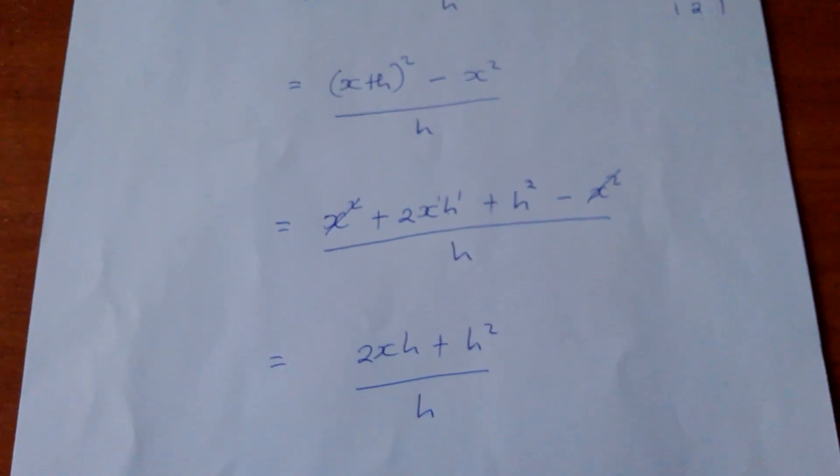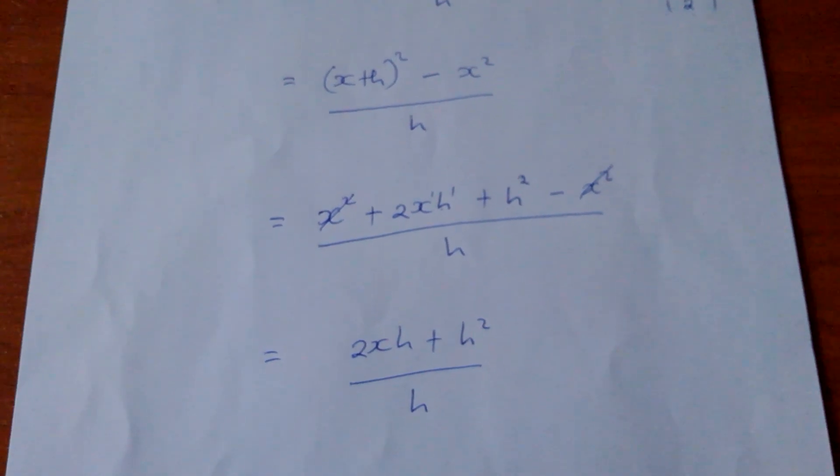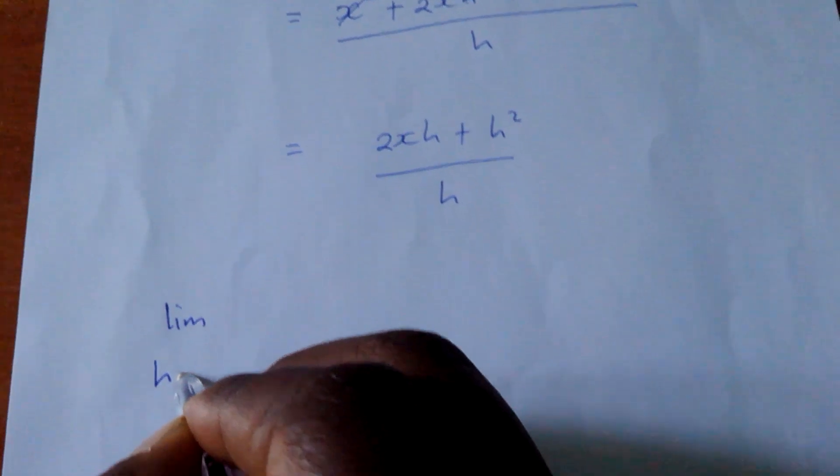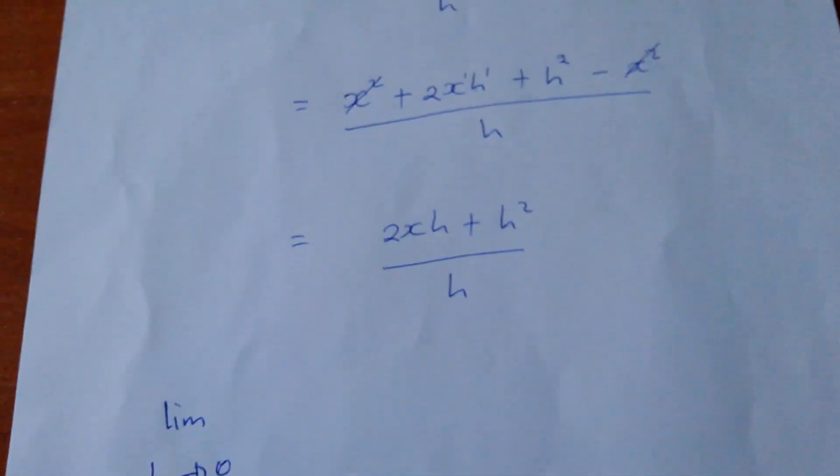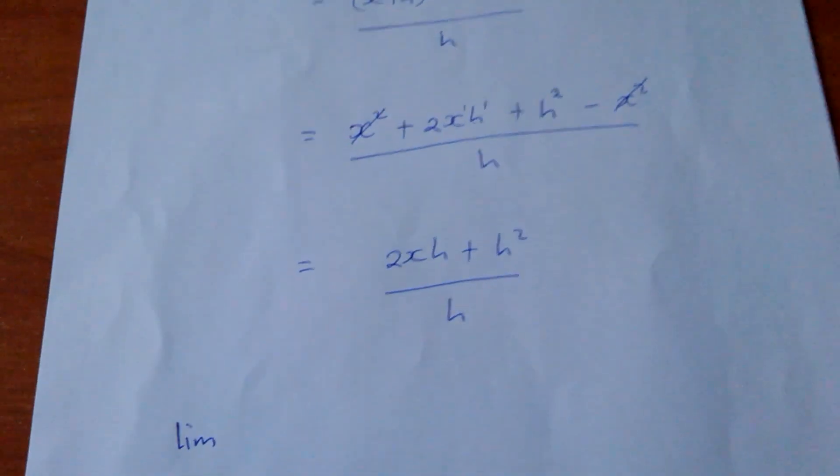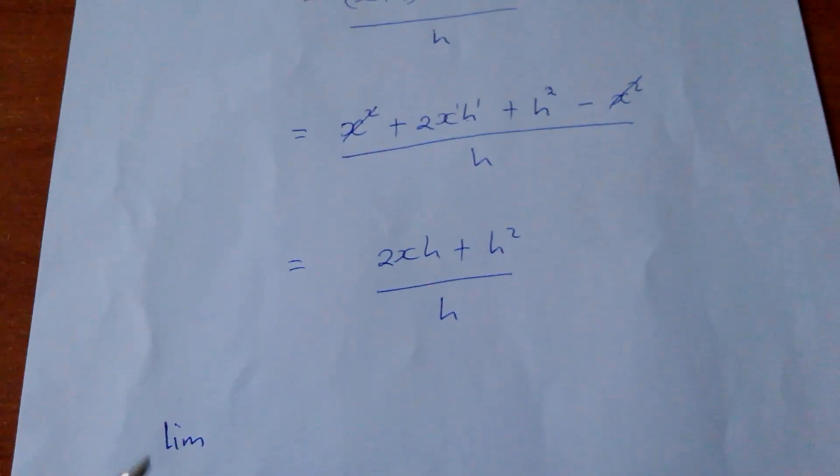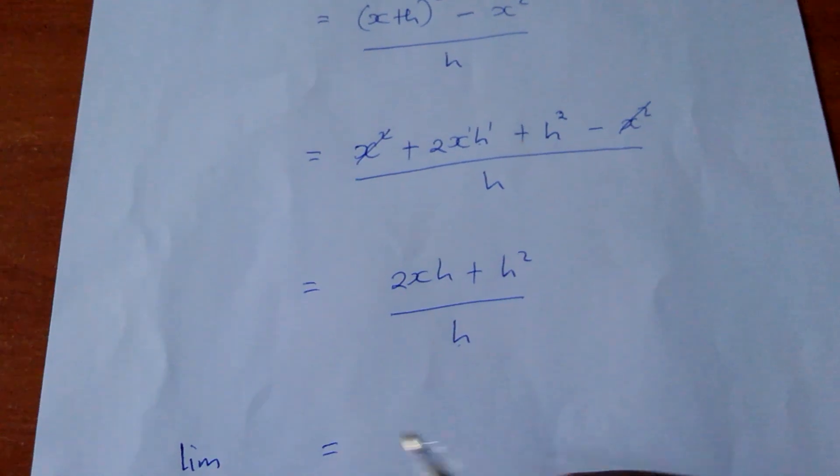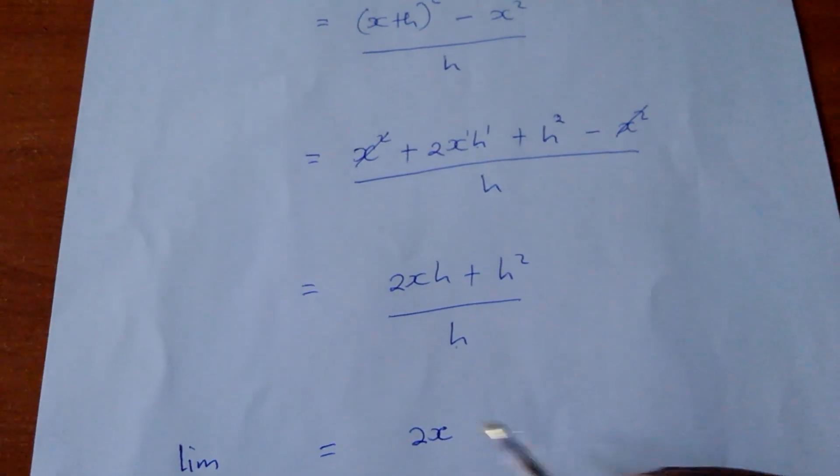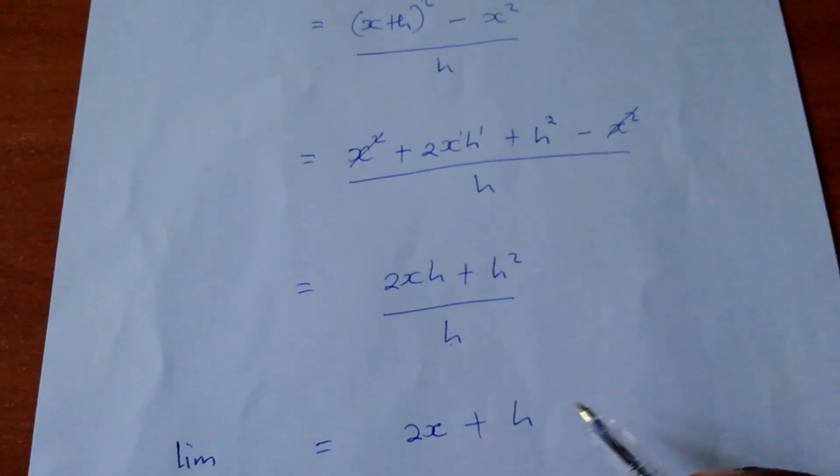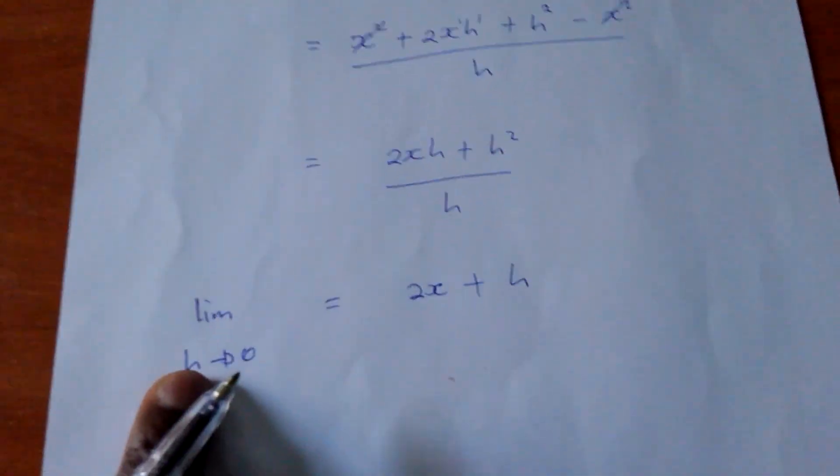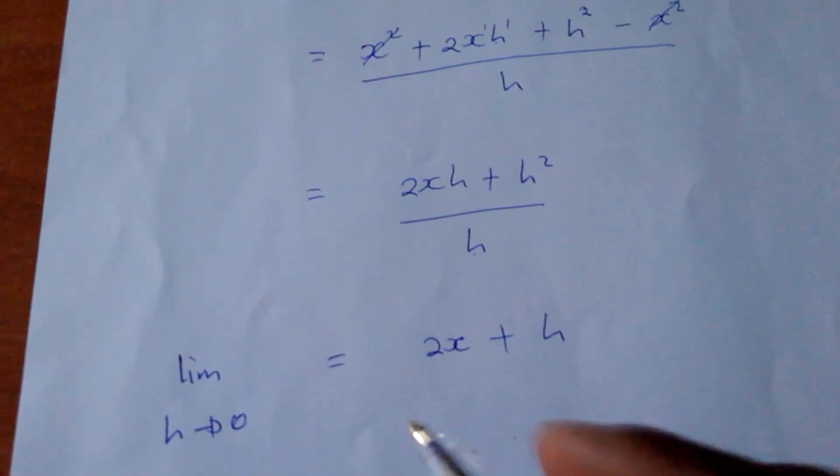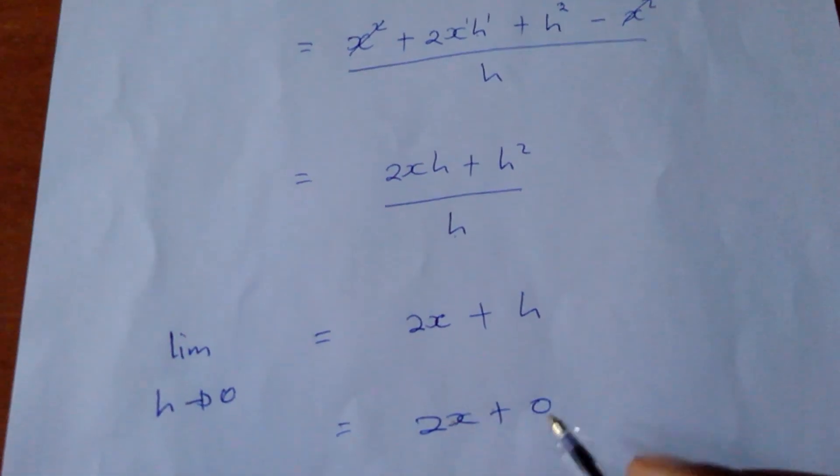Now this is when you bring in the limit, the limit of h tending to 0. Now whenever I see h, I'm going to put 0. But before I put it there, if I divide h throughout, I will be left with 2x plus h. So here, now you use the limit of h tending to 0. So it will be 2x plus 0, in which our answer would be 2x.